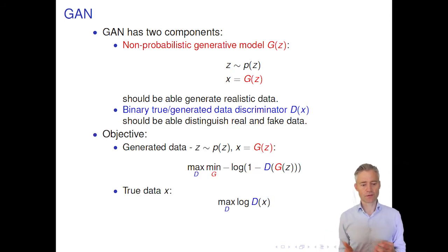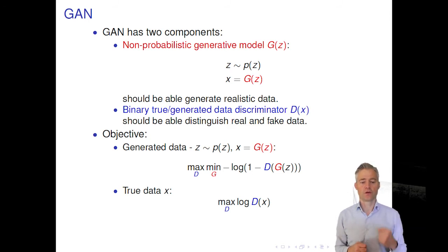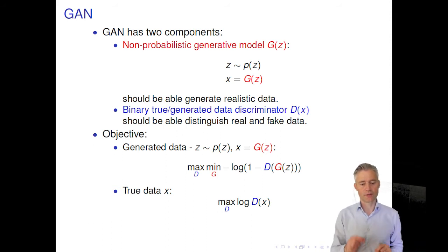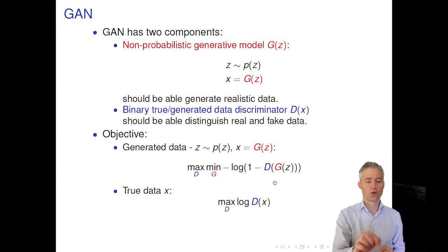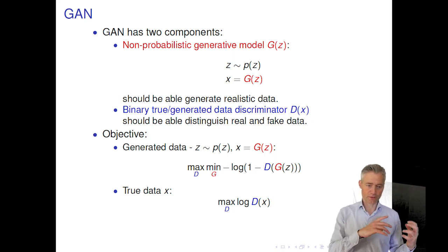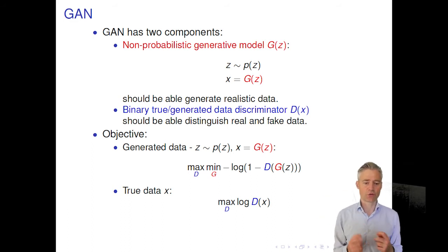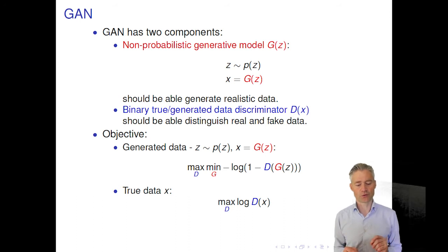Now we can write down the objective. For generated data, we use both the generator and discriminator. We have log(1 − D(G(z))), where D is the binary logistic discriminator. The max is over the discriminator — we want to label generated examples correctly — and we have a min over the generator because we want it to fool the discriminator. So we have this min-max objective. For true data, we simply maximize the probability that it is classified as a true example.